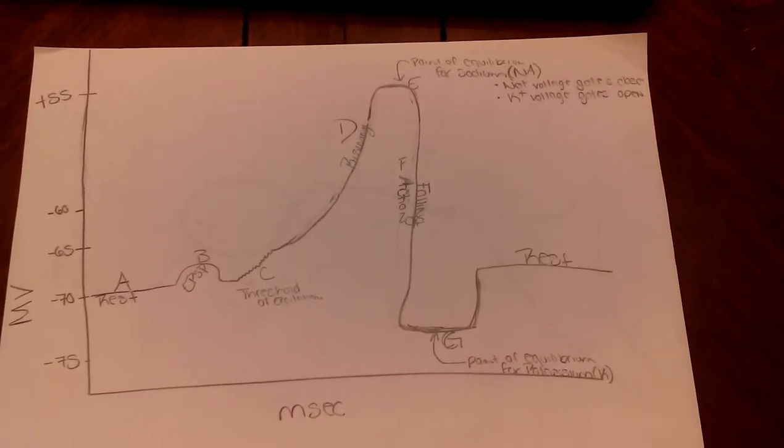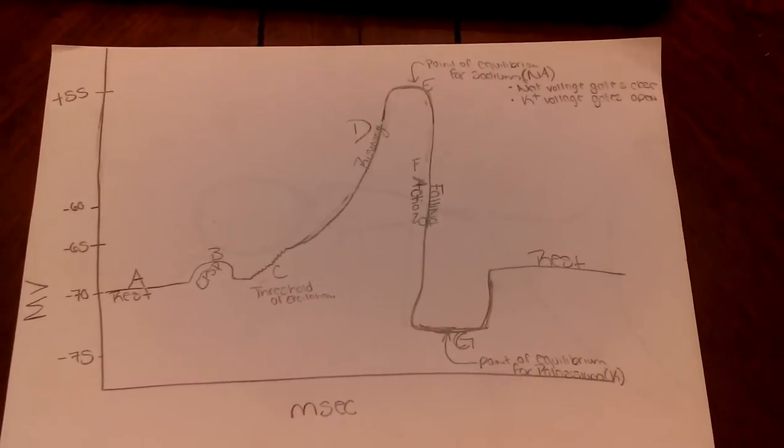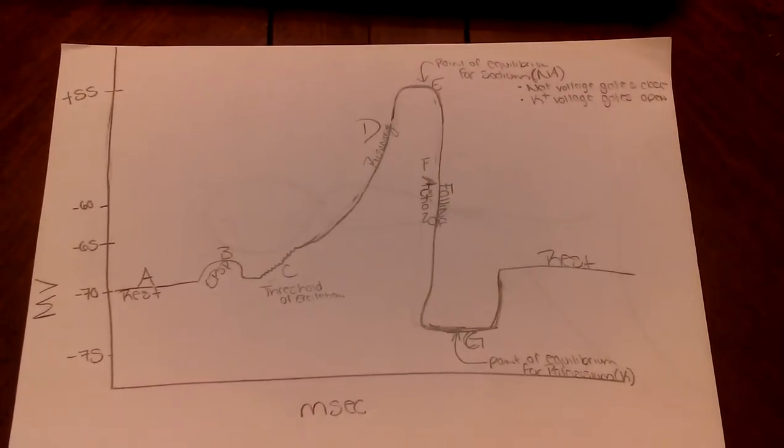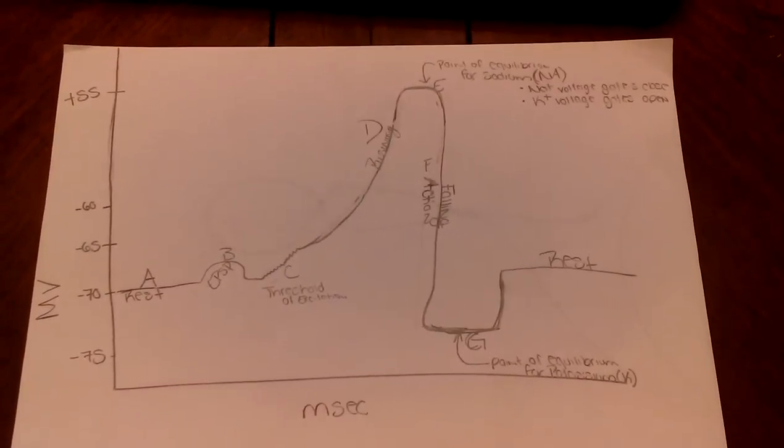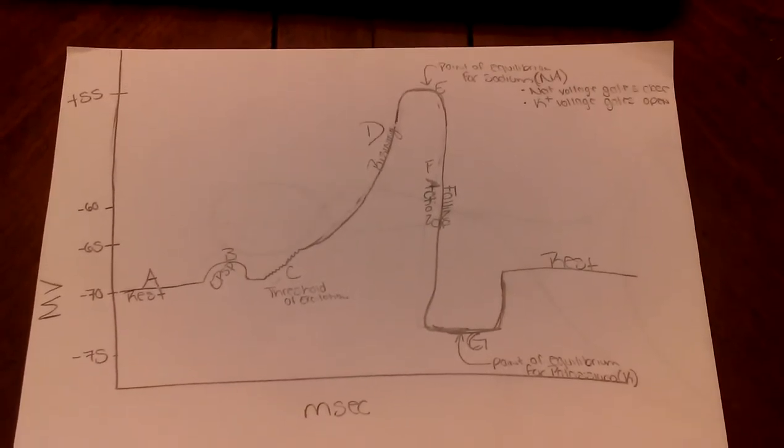The rising phase is characterized by a rapid depolarization, which stops at positive 55 millivolts. By the end of the rising phase, the sodium ion voltage-gated channels close, while the potassium ion voltage-gated channels remain open.